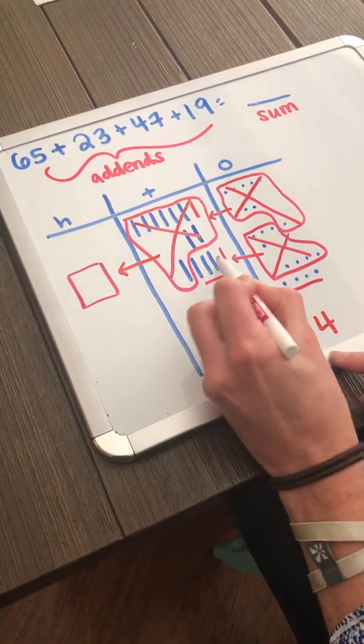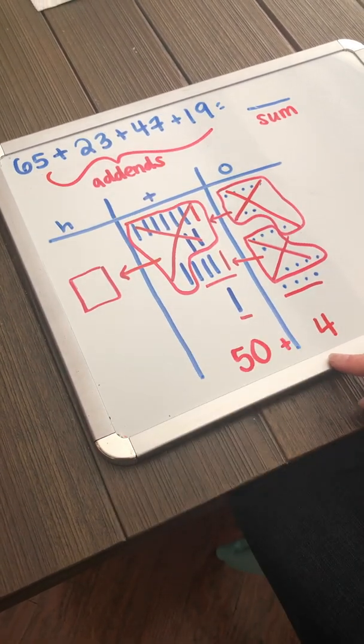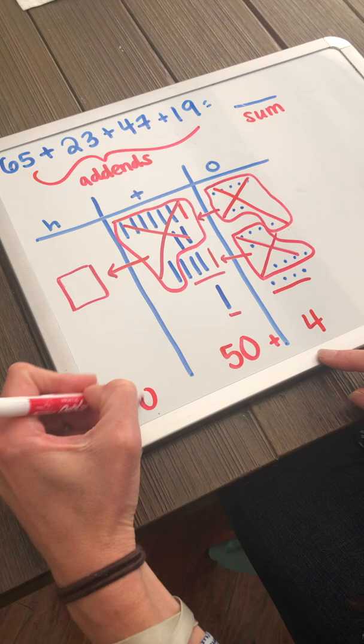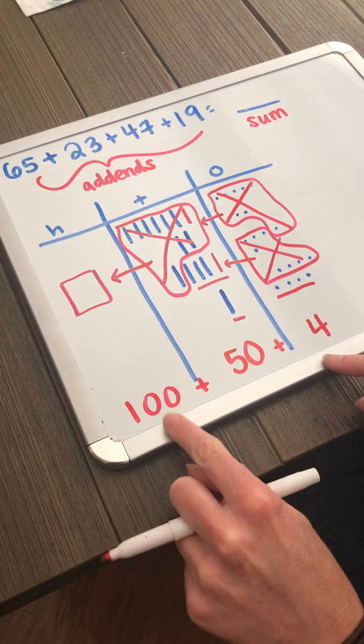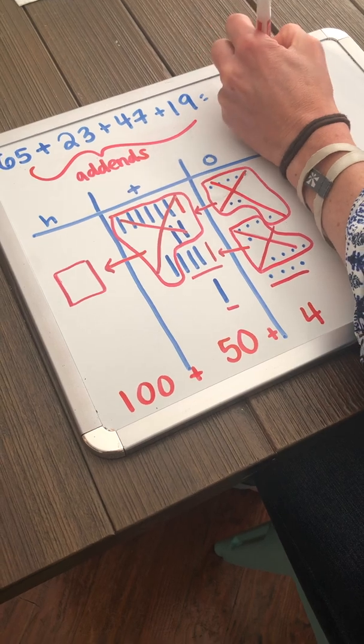I have 5 tens left over. 5 tens are not worth 5. They're worth 50. And now I have 100. So, my sum is 150 plus 4, which is 154.